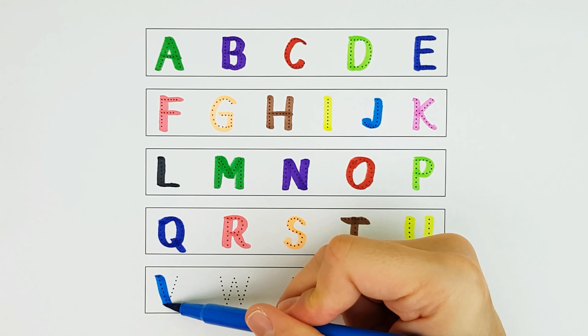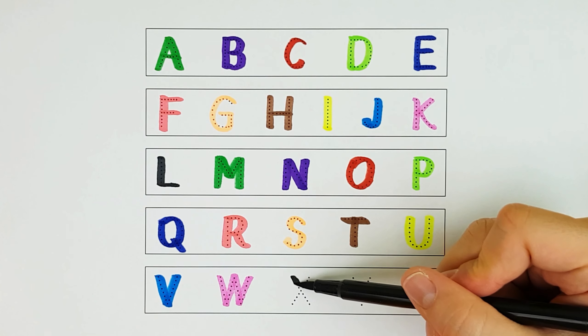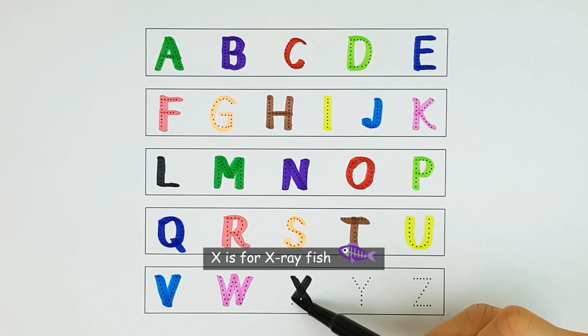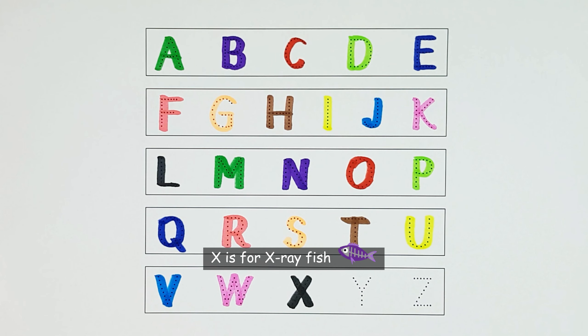V. V is for Vampire Bat. W. W is for Worm. X. X is for X-Ray Fish.